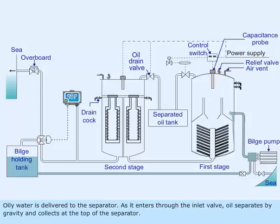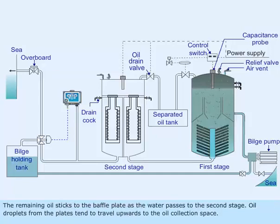Oily water is delivered to the separator. As it enters through the inlet valve, oil separates by gravity and collects at the top of the separator. The remaining oil sticks to the baffle plates as the water passes to the second stage. Oil droplets from the plates tend to travel upwards to the oil collection space.